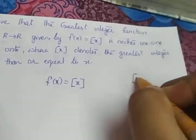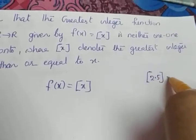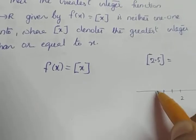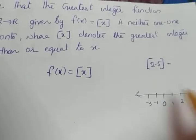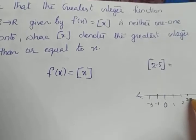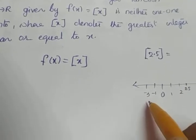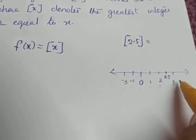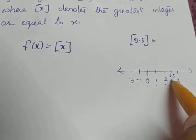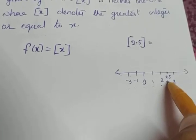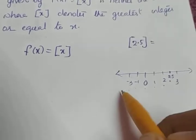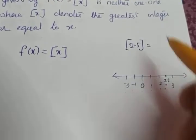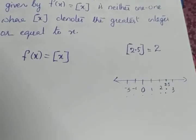If I need to find the greatest integer of 2.5, I will draw the number line. 2.5 comes between 2 and 3. The integers are marked on the number line. The greatest integer among all integers less than 2.5 is 2. So, ⌊2.5⌋ = 2.